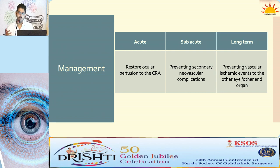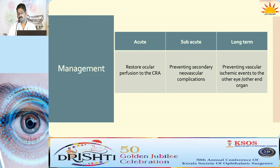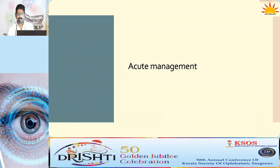Management of CRAO is broadly classified into three types: acute, subacute, and long-term. Acute and subacute management falls with the ophthalmologist; long-term treatment is with an intensivist. Acute management aims to restore ocular perfusion to the central retinal artery. Subacute management focuses on preventing secondary neovascular complications. Long-term management prevents vascular ischemic events to the other eye or other end organs.